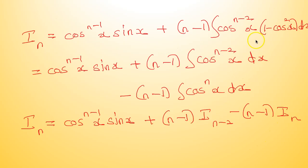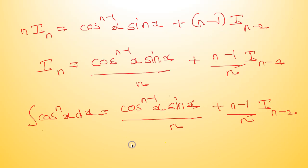Writing sin²x as 1 − cos²x, we get cos^(n−1)x·sin x + (n−1) integral cos^(n−2)x dx − (n−1) integral cos^nx dx, which is I_n. Taking I_n terms together: n·I_n = cos^(n−1)x·sin x + (n−1)·I_{n−2}, so I_n = cos^(n−1)x·sin x / n + (n−1)/n · I_{n−2}.